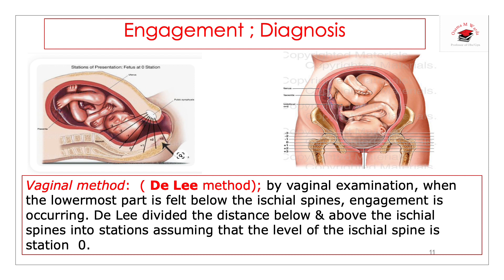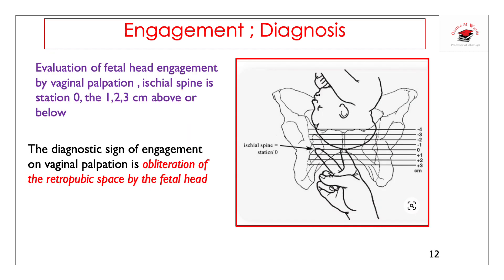The other method for diagnosis of engagement is the vaginal method, known as the DeLee method. By vaginal examination, when the lowermost bony part of the head is felt below the ischial spine, engagement is occurring. DeLee divided the distance below and above the ischial spine into stations, assuming the level of the ischial spine as station zero, with plus one, two, or three below, and minus one, two, or three above the ischial spine.